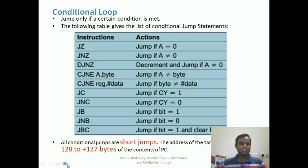Conditional jump statements include Jump Zero, which jumps only if the zero flag is set or the content of the accumulator becomes zero. When the content of the accumulator becomes zero, the zero flag is automatically set and the jump statement is executed.